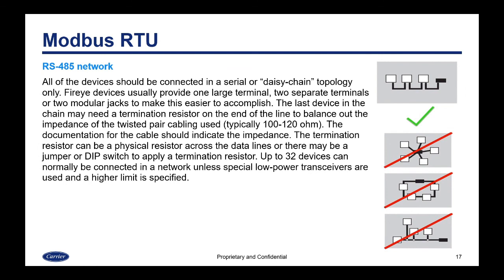All of the devices should be connected in a serial or daisy chain topology. FireEye devices usually provide one large terminal or two separate terminals or two modular jacks to make this easier to accomplish. The last device in the chain may need a termination resistor on the end of the line to balance out the impedance of the twisted pair cabling used. This impedance is typically 100 to 120 ohms. The documentation for the cable used should indicate the impedance. The termination resistor can be a physical resistor across the data lines, or there may be a jumper or DIP switch to apply one.